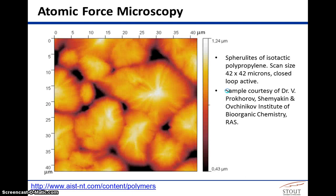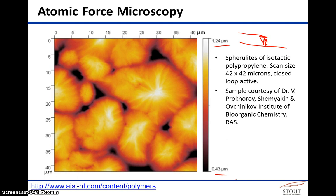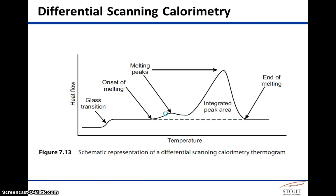Atomic force microscopy is a third technique that gives you topographical information. The way this works is there's a cantilever with a sharp point that is tapped along the surface and rastered back and forth. From the deflection of that tip, you can get topography — like a topographical map of the surface — and you actually see height differences moving from the interstitial region to the peak at a nucleated site. So crystalline domains actually impart topography onto the surface of the polymer.